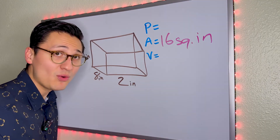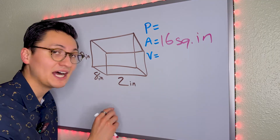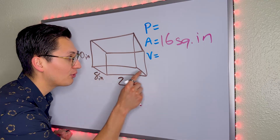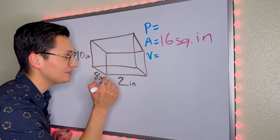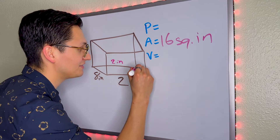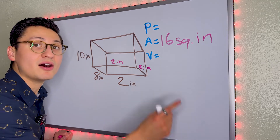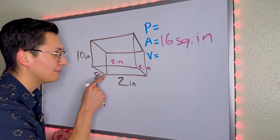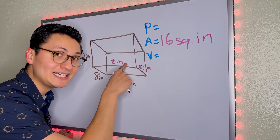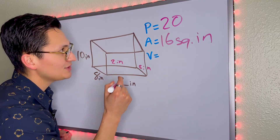Now let's do perimeter — add all sides of the base. If this side is 2 inches, the opposite side is 2 inches. If this side is 8 inches, the other side is 8 inches. 8 plus 8 is 16, plus 2 is 18, plus 2 is 20. The perimeter is 20 inches.